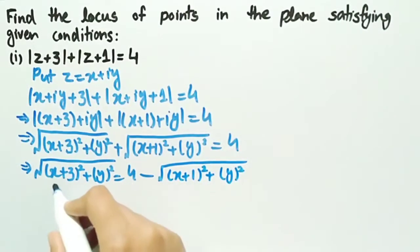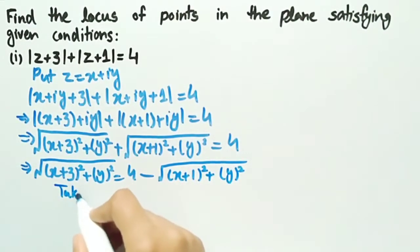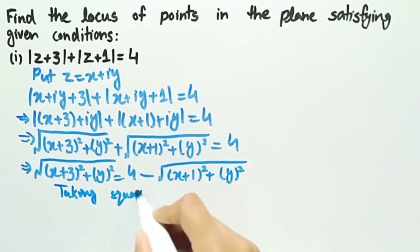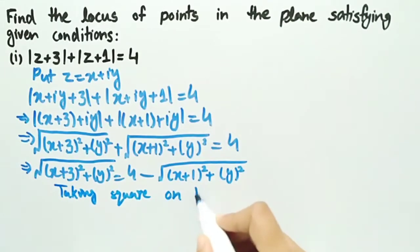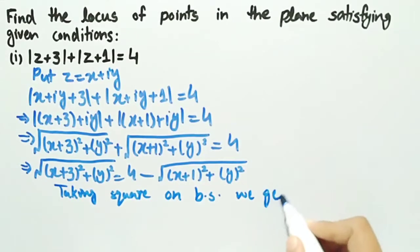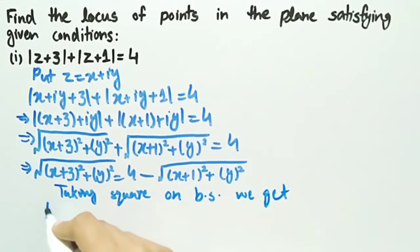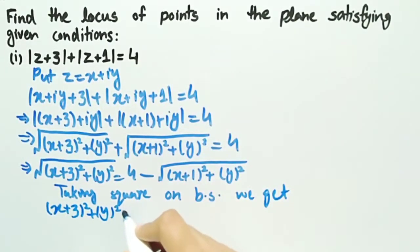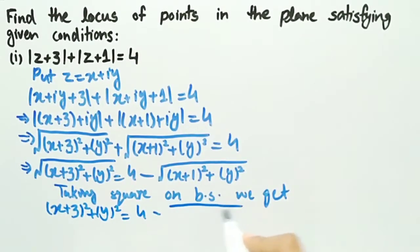Now taking square on both sides, we get (x plus 3) whole square plus y square equal to 4 minus square root of (x plus 1) squared plus y squared, whole square.